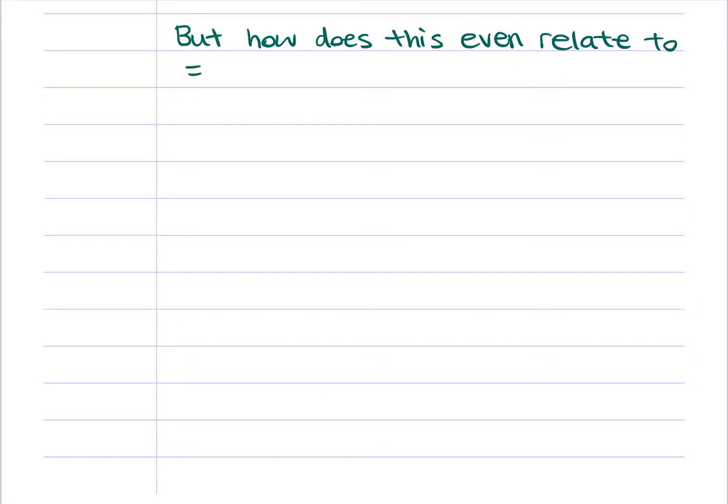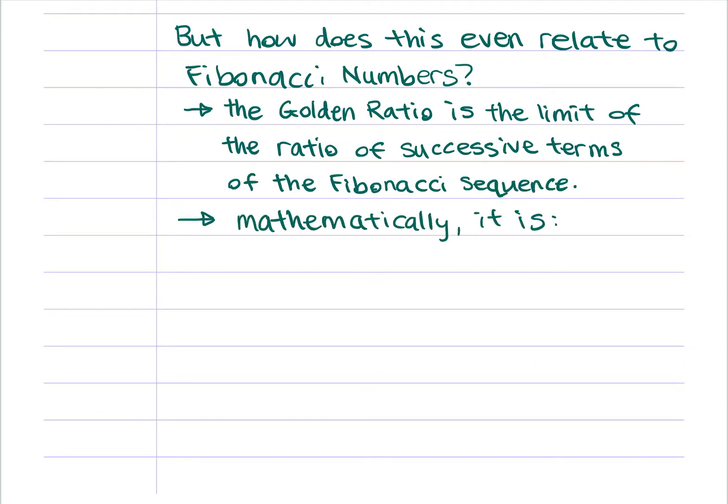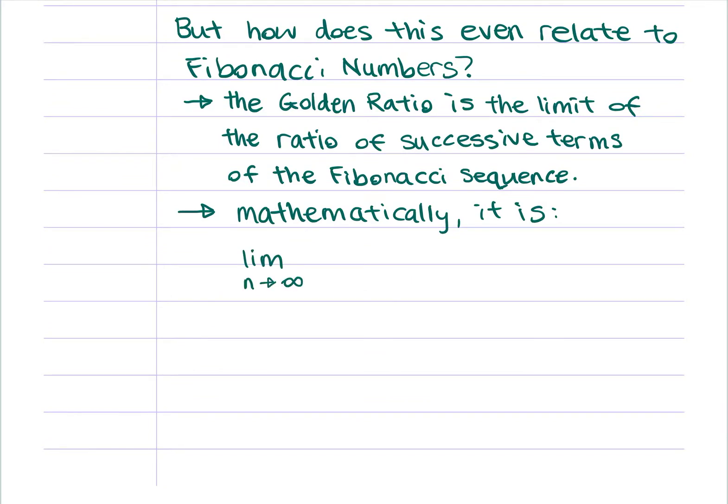Okay, that's cool and all, but how does all of this even relate to the Fibonacci sequence? Well, the golden ratio actually is the limit of the ratios of successive terms of the Fibonacci sequence. To put it in mathematical terms, it's the limit of h of n plus 1 over h of n as n goes to infinity.